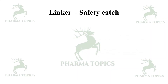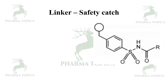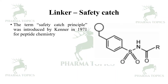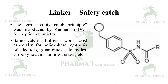The safety catch linker contains an SO₂-NH₂ group. The term 'safety catch principle' was introduced by Kenner in 1971 for peptide chemistry. Safety catch linkers are used especially for solid phase synthesis of alcohols, amines, aldehydes, carboxylic acids, amides, esters, and others.